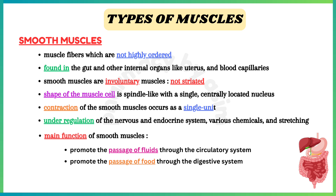Typically the contraction of smooth muscles occurs as a single unit. However, multi-unit smooth muscles are found in the iris of the eye, trachea, and large arteries. Smooth muscles are under regulation of the nervous system, endocrine system, various chemicals, and stretching. The main function of smooth muscles is to promote the passage of fluid through the circulatory system and food through the digestive system.